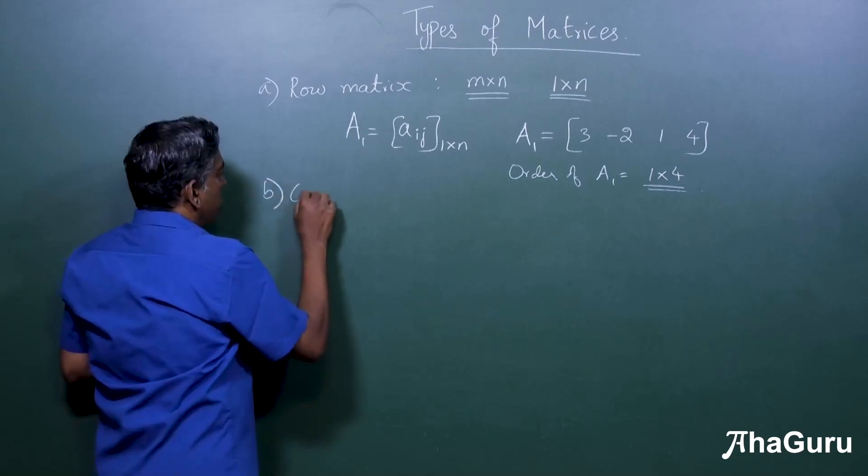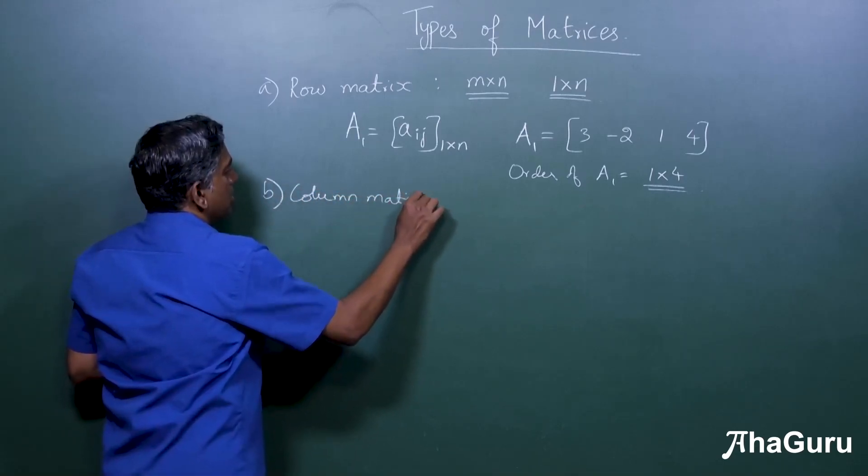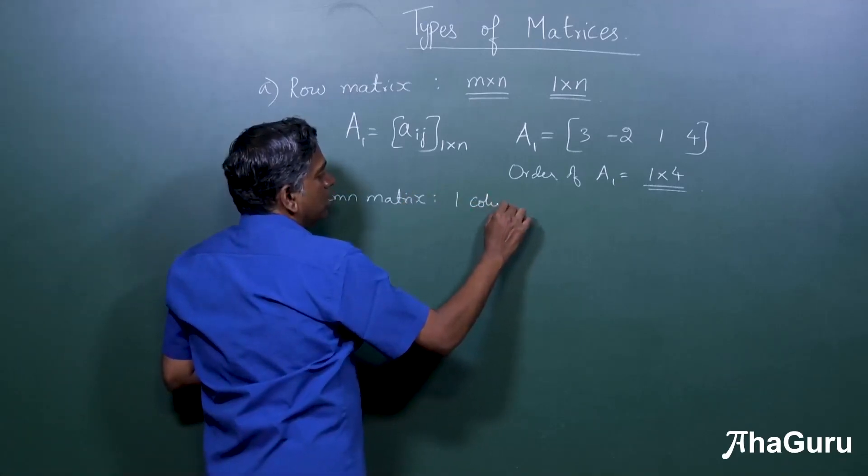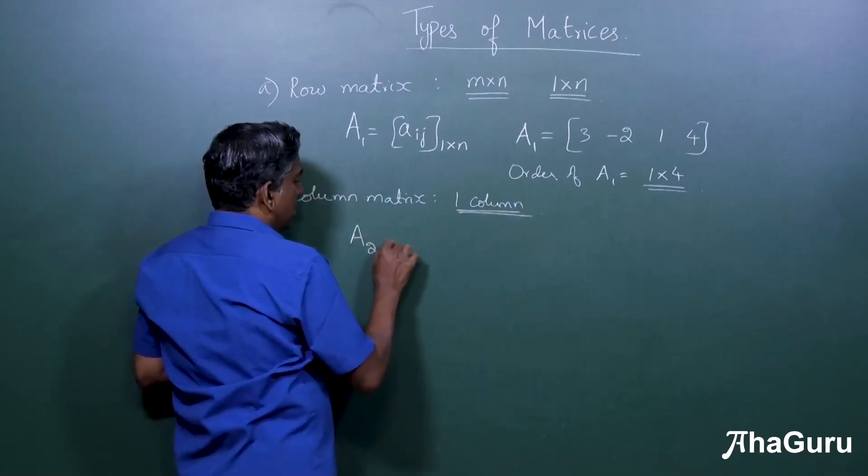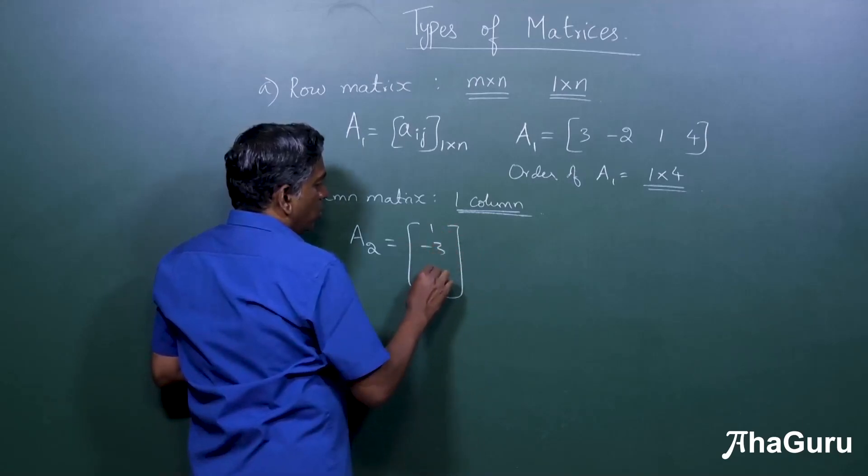Now a column matrix, by now you would have guessed, is a matrix with one column. So let me call this as a2, a matrix with only one column.